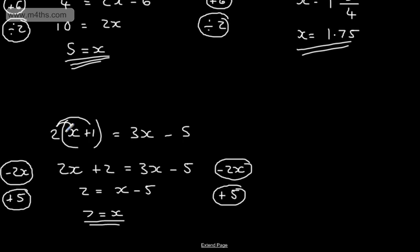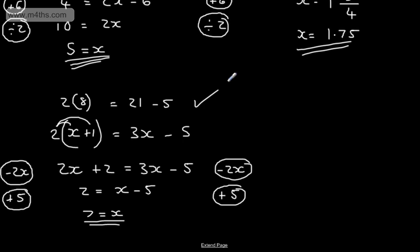Checking: if x is 7, this would be 2 lots of 8, which gives 16. This would be 3 lots of 7, which is 21 minus 5. 16 equals 16, so x is 7. So sometimes you might have to expand the brackets and collect like terms, then solve from there.